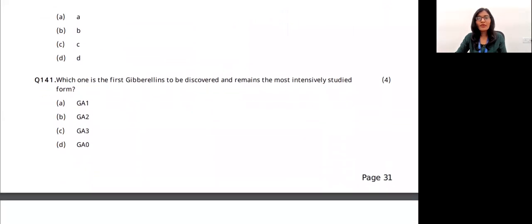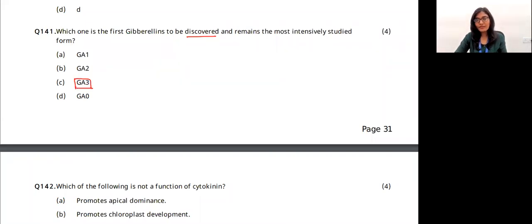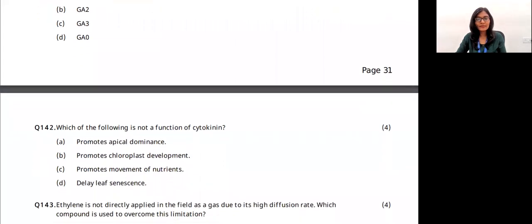Which gibberellin was first discovered? It is always GA3 — gibberellic acid 3 was the first gibberellin discovered. The answer is option C.